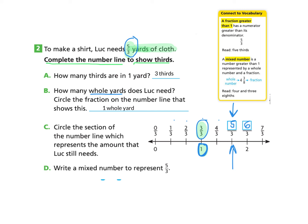The next section C says circle the section of the number line which represents the amount that Luke still needs. So if he has a whole yard here and we need to get to five thirds, then the amount that he still needs is right here. We know that each section represents a third. So we know that this section that we've circled is one third and another third. So what Luke needs is he needs one whole yard, which we know from right here. And then he needs one third and one third. And that's really two thirds. So our mixed number that represents five thirds is one whole and two thirds. And remember a mixed number is a number that is represented by a whole number and a fraction.